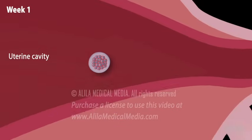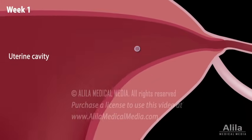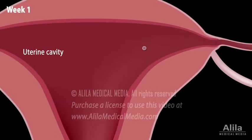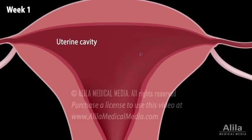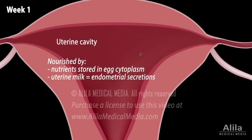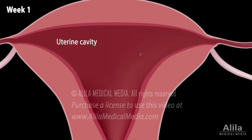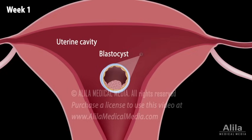The morula continues to divide while floating freely in the uterus for several more days. During this time, it consumes nutrients stored in the egg cytoplasm and uterine milk secreted by the endometrium. When there are about 100 cells, the cells start to arrange themselves around a fluid-filled cavity, forming a blastocyst.